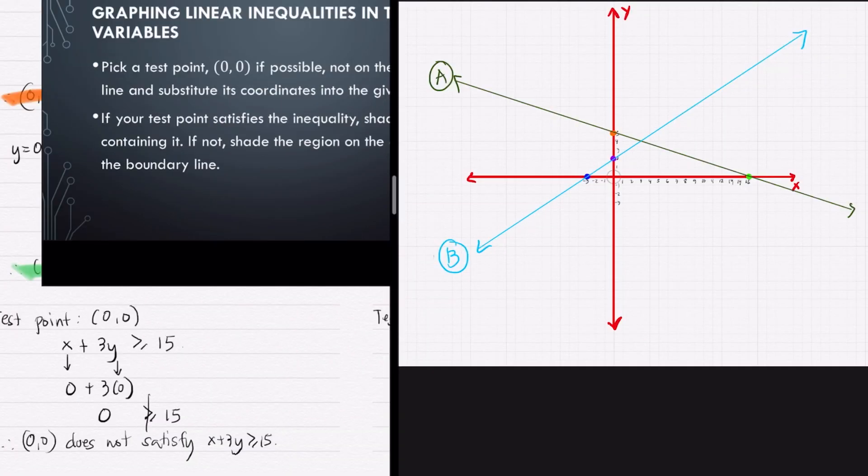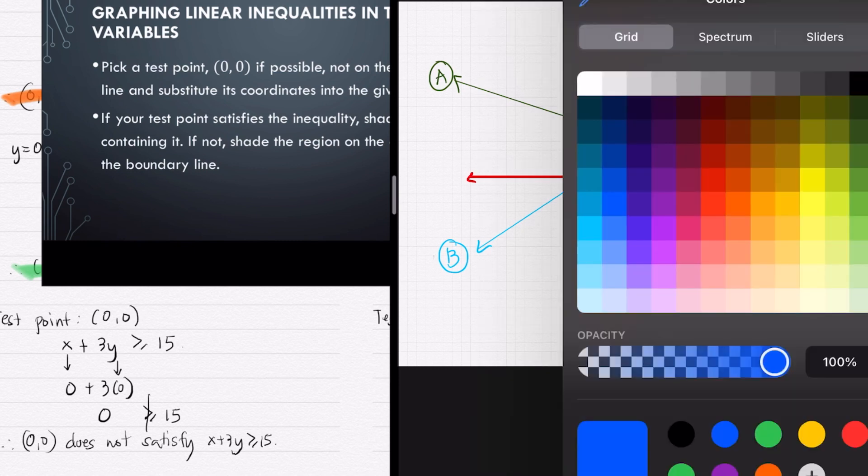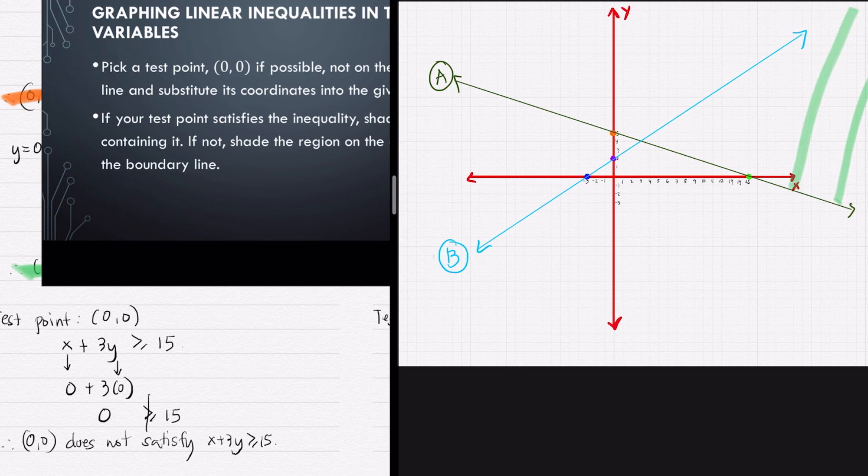As noted, if 0 does not satisfy the inequality, we will not shade the region containing it. And since 0 is below the line A and does not satisfy inequality A, we will shade the upper region instead.